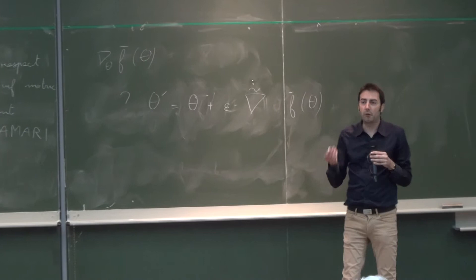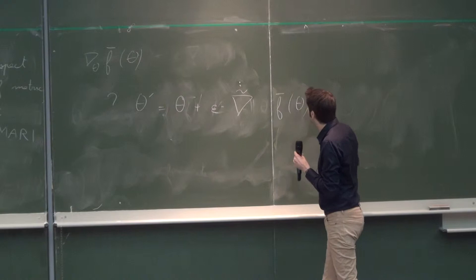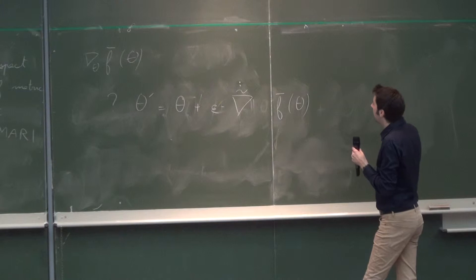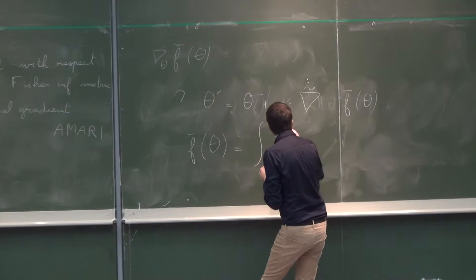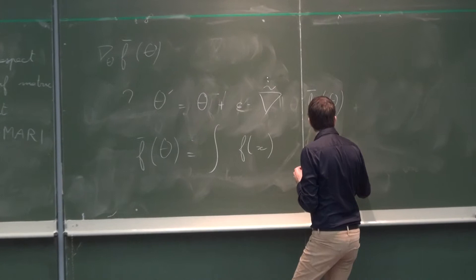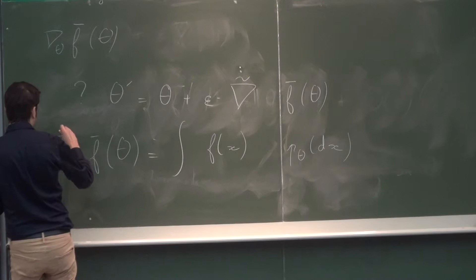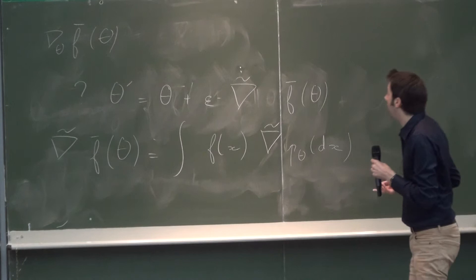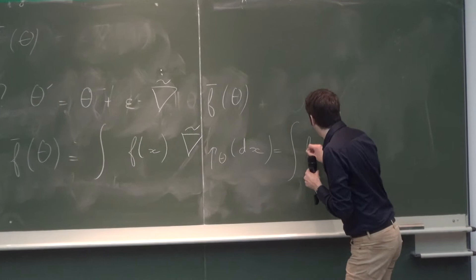So how do you work with this natural gradient of f-bar? One important thing is that f-bar is an expectation under p_theta — it's an integral of f(x) times p_theta(x) dx. If you want to take the gradient of this in any metric, this is an integral involving the gradient of log p_theta. This rewrites as an expectation under p_theta, using the fact that the gradient of p_theta equals the gradient of log p_theta times p_theta.